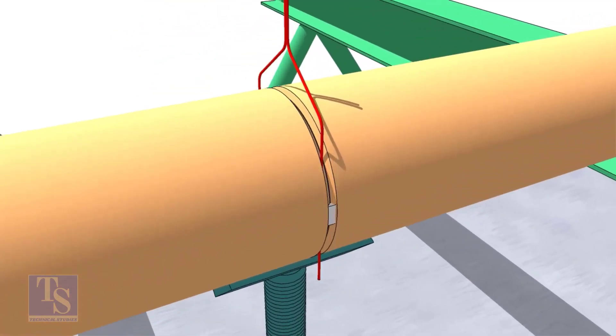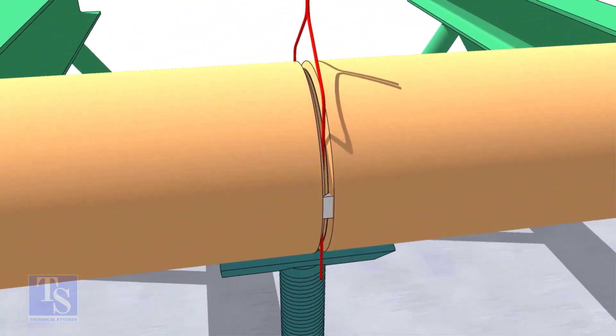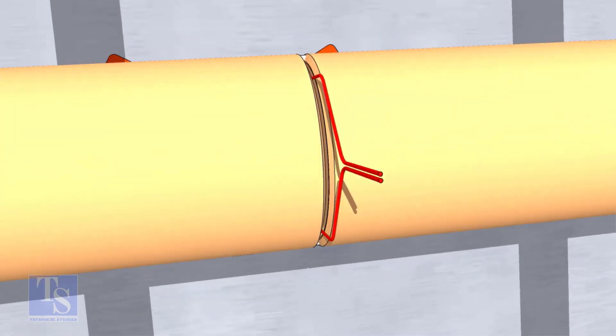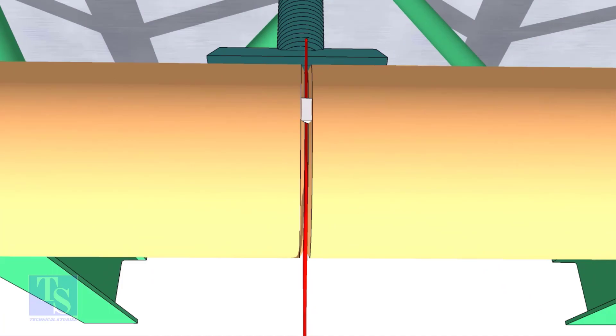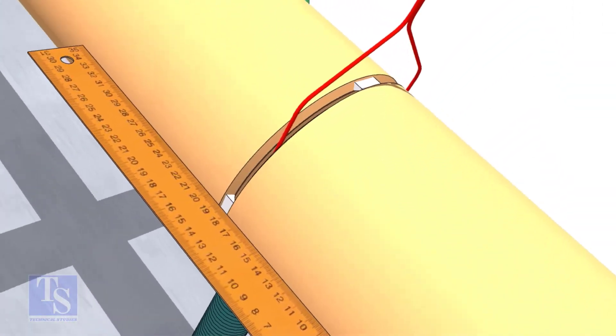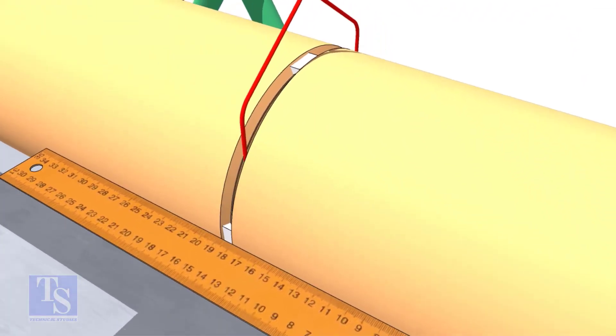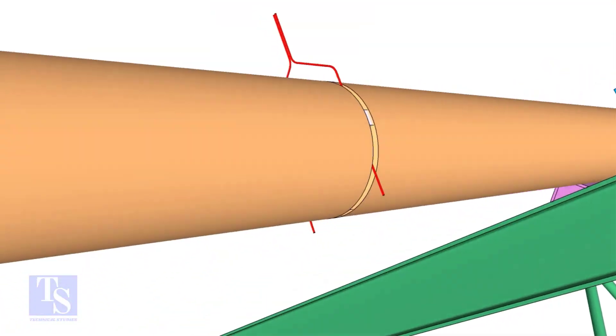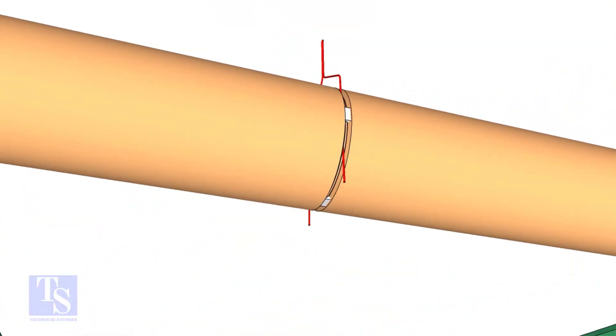Tack weld on both sides of the pipe. Then the top and bottom of the joint. Don't forget to cross-check the overlap.